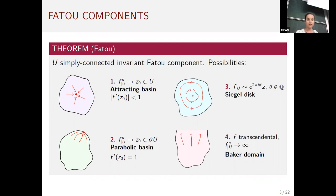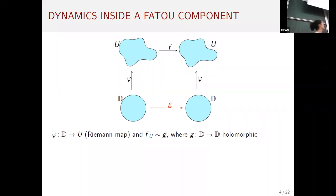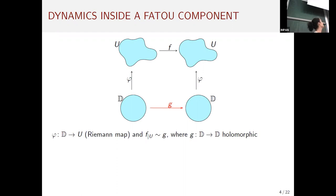To study the dynamics inside the Fatou component, one approach is to conjugate the dynamics of f inside U to the dynamics of a self-map of the unit disc via the Riemann map. Since our Fatou component is simply connected, we can consider the Riemann map between the unit disc and the Fatou component, giving the conjugacy.